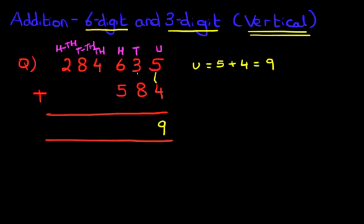Now we're going to do the tens. The tens is three plus eight. Three plus eight is eleven. So let's write that down. One here and one here.